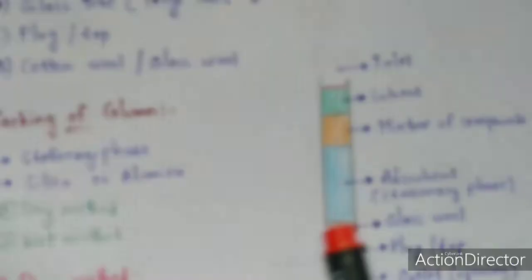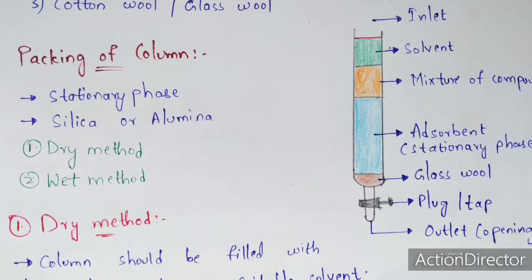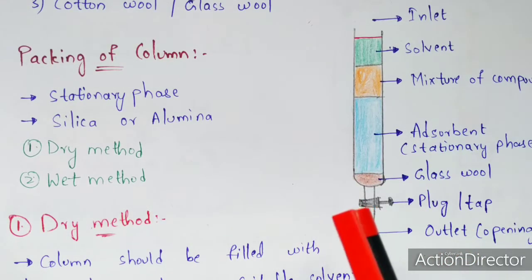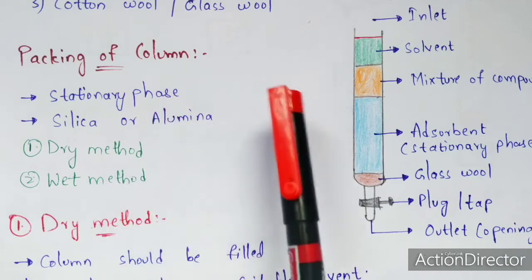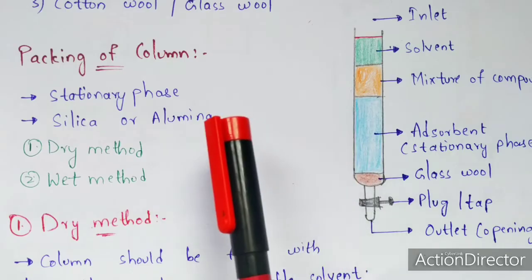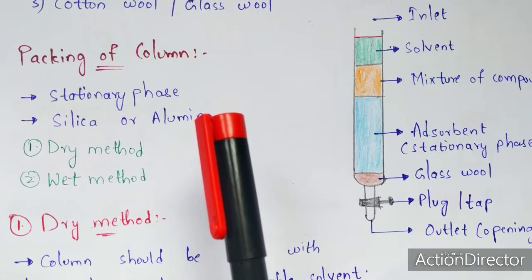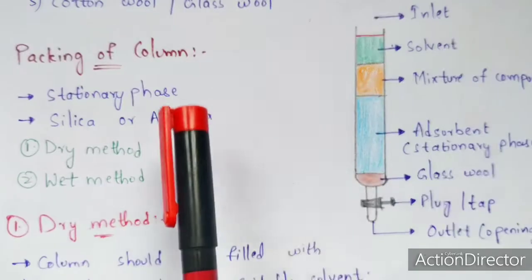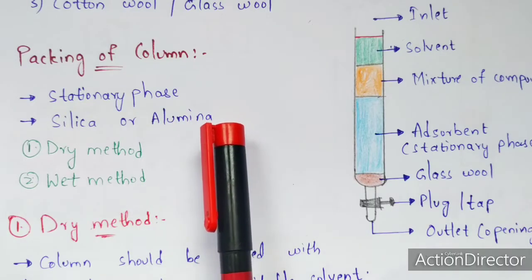Now let us learn about the packing of the column. The column refers to the inner space present inside the tube. The stationary phase used to pack this column is a solid adsorbent — either silica or aluminium. These are used as the stationary phase in column chromatography.